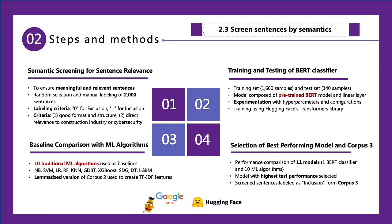Afterwards, we want to screen out the sentences that are high-quality in semantics, so we used semantic screening for sentence relevance. We manually labeled 2,000 sentences to ensure their relevance, using 0 for exclusion and 1 for inclusion. The criteria were good format and direct relevance to construction or cybersecurity. We utilized 10 traditional machine learning algorithms for baseline comparison, using a lemmatized version of our second corpus to create the TF-IDF features. We trained and tested a BERT classifier using the Hugging Face Transformers library.